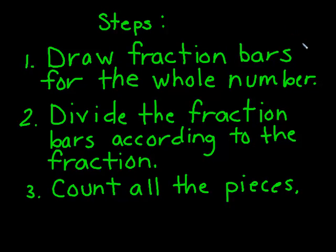Alright, so let's write down the steps that we just did for that example. The first thing we did was draw a fraction bar for the whole number. So we drew 2 fraction bars. The next thing we did was we divided those fraction bars according to the fraction that is the divisor. And then you count all the pieces.